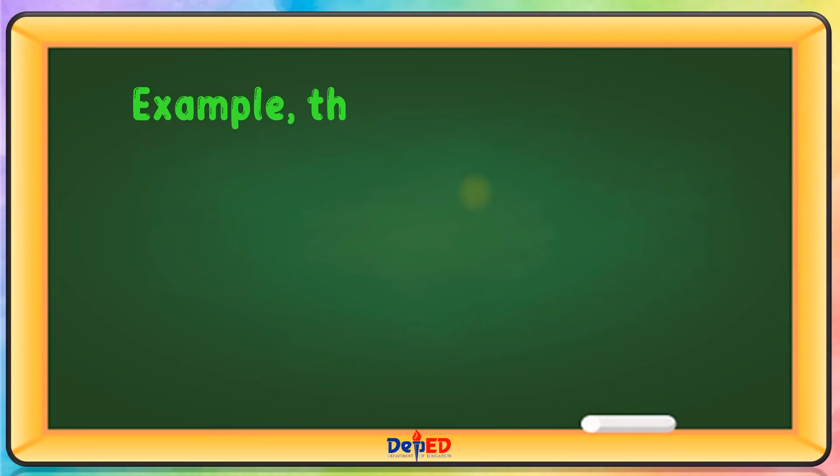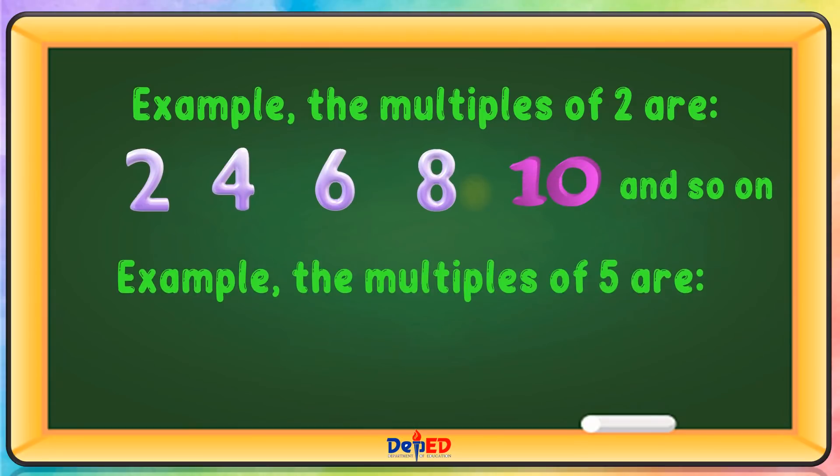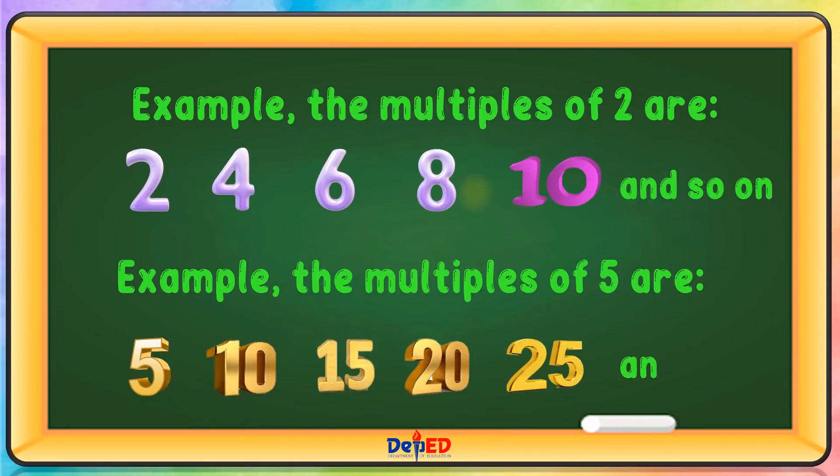Example: the multiples of 2 are 2, 4, 6, 8, 10, and so on. Example: the multiples of 5 are 5, 10, 15, 20, 25, and so on.